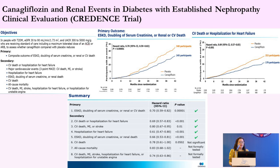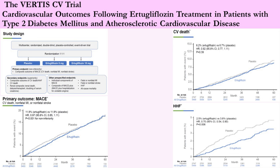Next is the CREDENCE trial — canagliflozin and renal events in diabetes with established nephropathy. Patients with diabetes and GFR 30-90 and albuminuria had a primary composite endpoint of ESKD, renal or CV death. Both the primary outcome and CV death or hospitalization favored canagliflozin over placebo. Next is the VERTIS-CV trial — cardiovascular outcomes following ertugliflozin treatment in patients with type 2 diabetes and atherosclerotic CVD. In this case, only hospitalization for heart failure showed reduction with ertugliflozin compared to placebo. For the primary MACE outcome and CV death, the two groups did not differ significantly.